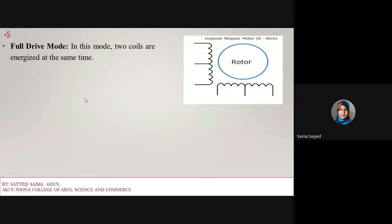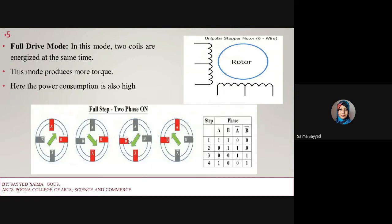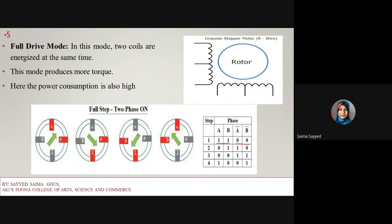The next mode is full drive mode. In this mode two coils are energized at the same time. This mode produces more torque and power consumption is high. It is also called two-phase-on step mode. The windings are named A, B, A-dash, B-dash. At step one A and B are energized, the other two are zero. Then B and A-dash, then A-dash and B-dash, and finally B-dash and A.